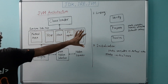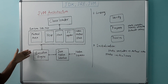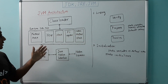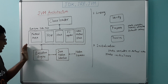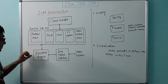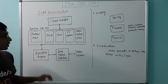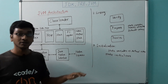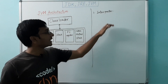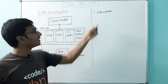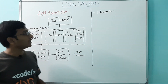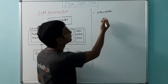This is all about runtime data areas. Next comes the execution engine component. Once the class loader loads and verifies the class files, the execution engine executes the Java program using the information stored in the memory areas. The execution engine does this in three parts. First is the interpreter — bytecode is executed line by line and it is quite slow. The disadvantage of the interpreter is that whenever a method is called multiple times, each time a new interpretation is required. To mitigate this, we have the JIT compiler.